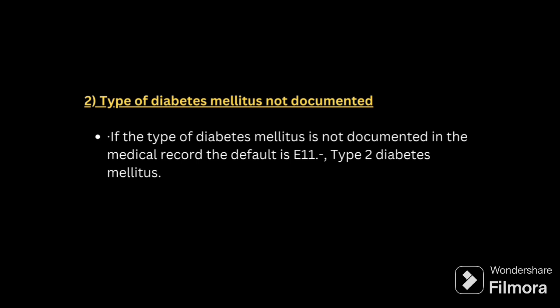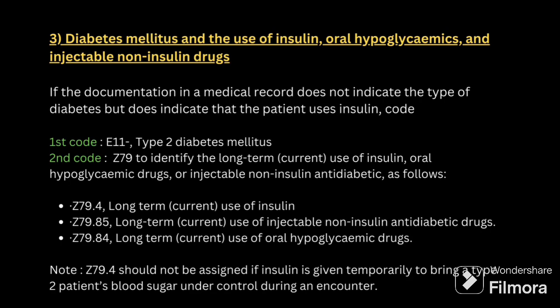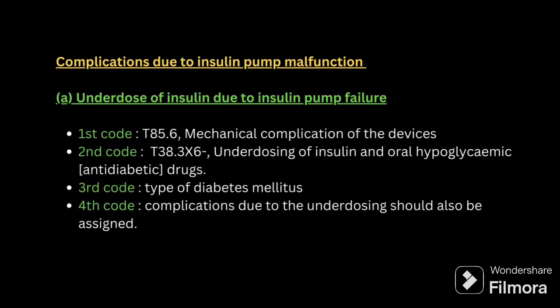You have to know what is type 1 and what is type 2. If the age is clearly mentioned as below 14 years, you have to code for type 1 diabetes. Regarding diabetes mellitus and use of insulin or oral hypoglycemic drugs and injectable non-insulin drugs — if the documentation in a medical record does not indicate the type of diabetes, code it as type 2 diabetes. If the patient is taking insulin, the second code should be for insulin. Either insulin, drugs, or whatever it may be, that should be the secondary code.